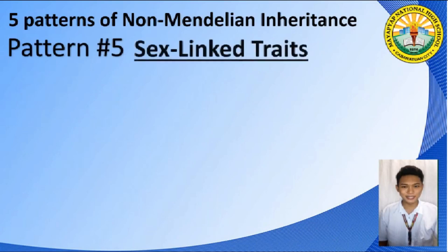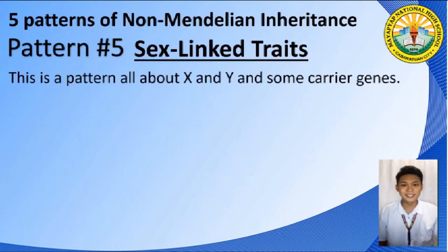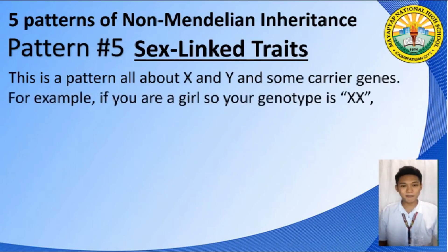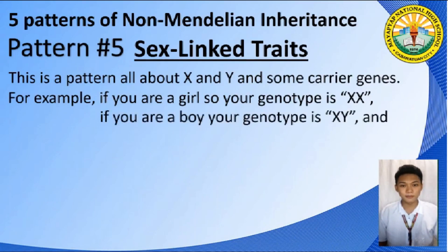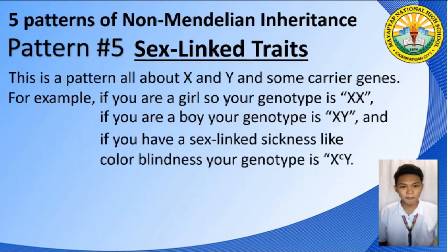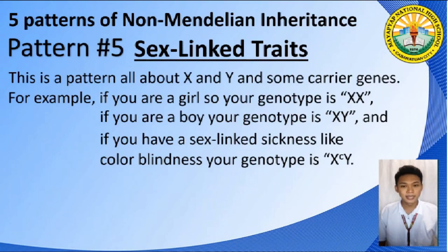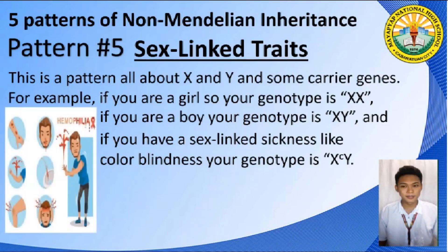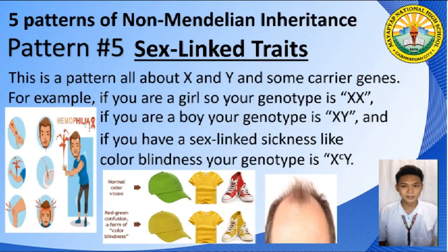Pattern number five is called Sex-Linked Traits. This pattern is all about X and Y chromosomes and carriers. If you are a female, your genotype will be two capital letter X. If you are a male, then your genotype will be a capital X and a capital Y. If you have a condition like color blindness or another sex-linked condition, your genotype will be a capital X with a superscript C and a Y. Most sex-linked diseases can only manifest in men, and females can only be considered as carriers. Examples of sex-linked traits are hemophilia, color blindness, and pattern baldness.